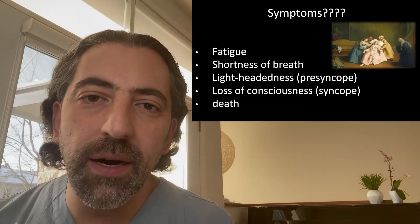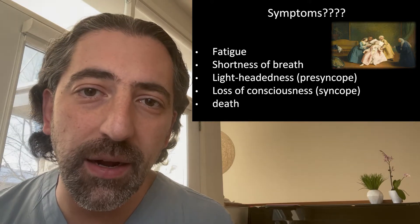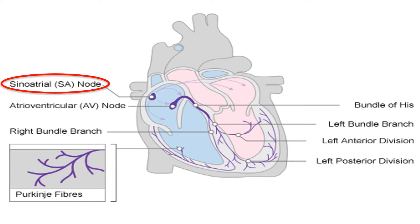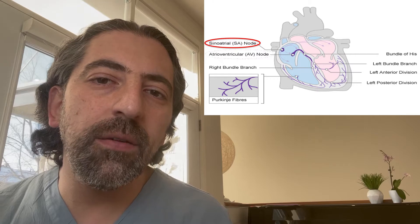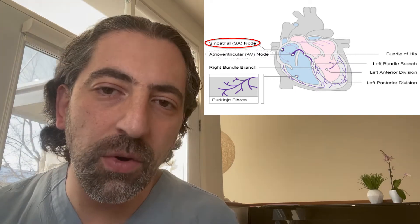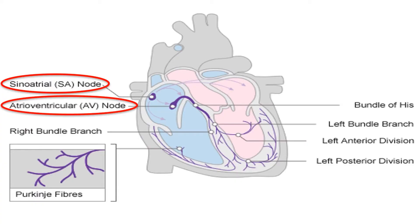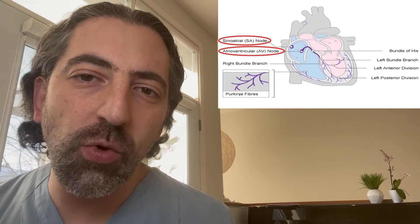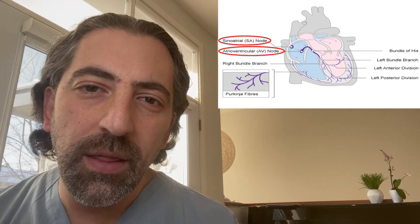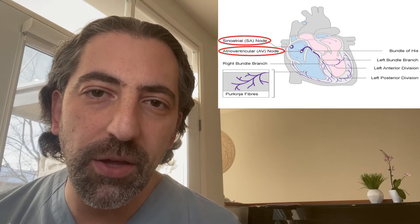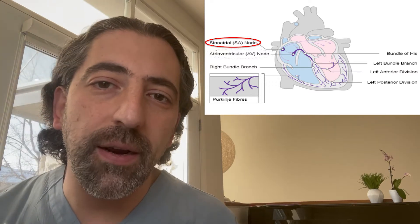When we talk about bradycardia, there are two structures in the heart where bradycardia can be localized to as being the cause. The first is the sinoatrial node, the normal pacemaker of the heart where depolarization usually begins. Problems with the sinoatrial node can be due to abnormal impulse formation or abnormal impulse conduction. The other structure is the AV node, which sits between the atria and the ventricles and is usually the only path of depolarization from the top chambers to the bottom chambers. At the AV node, the problem is usually an issue of impulse propagation. In this video, we'll be looking at sinoatrial node-related causes of bradycardia.